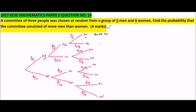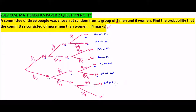The second branch gives man, man, and woman. The third gives man, woman, and man. The fourth gives man, woman, and woman. Then woman, man, and man. Then woman, man, and woman. Then woman, woman, and man. And finally three women.